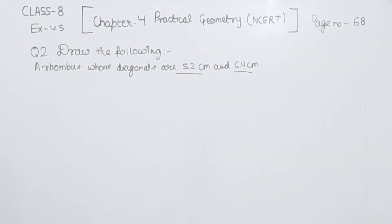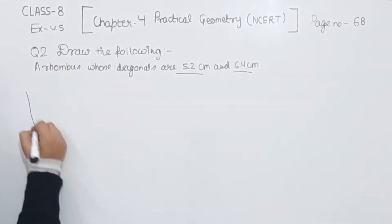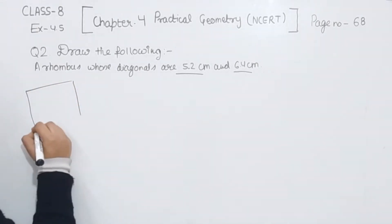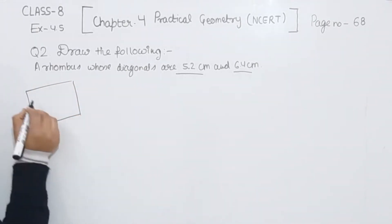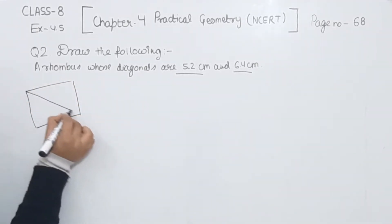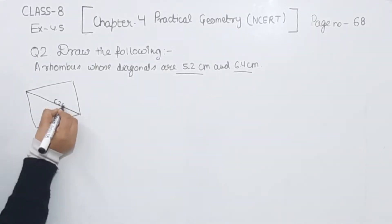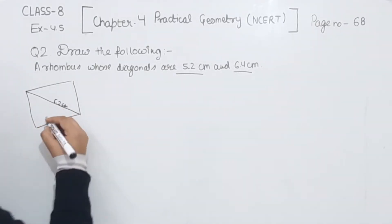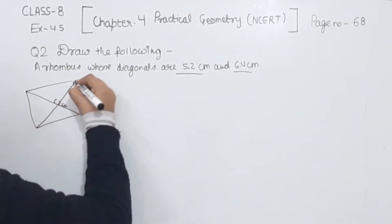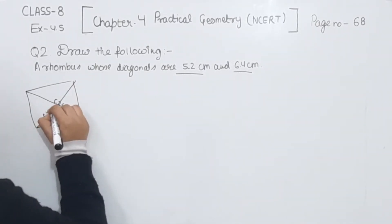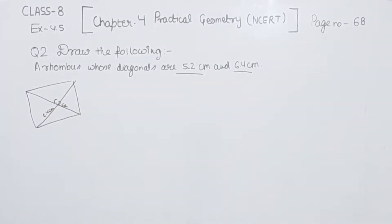So first of all, we are going to draw a rough sketch. Suppose this is the rhombus we are having. One of the diagonals is 5.2 cm and the other one is 6.4 cm.